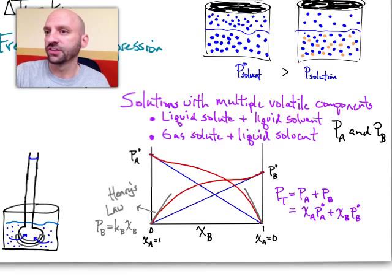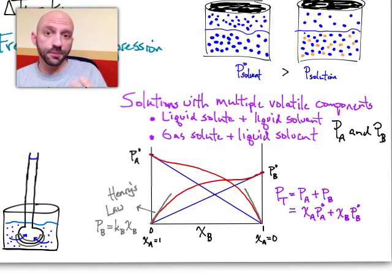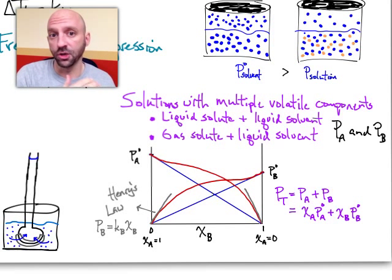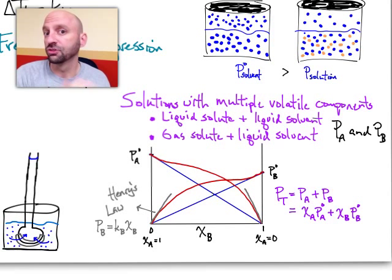So let's take a look at what we've got going on here. As I just said we're going to talk about solutions with multiple volatile components. So we are talking about two different situations. We could have a liquid solute in a liquid solvent. So for example we could talk about maybe methanol dissolved in water or ethanol dissolved in water or hexanes dissolved in pentanes. These are all different liquid solvents and so they can both evaporate. They can both contribute to the vapor pressure.